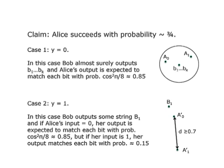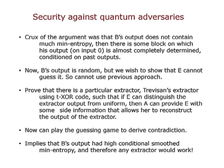I was very sloppy in this argument — assuming Alice could exactly guess Bob's string and that you were exactly at 0.85. You can weaken all these parameters and everything works out. So how do you move on to reasoning about security against quantum adversaries? If you look back at the argument, the crux was: if B's output does not contain much min entropy, there must be a block that's almost deterministic, and then you can exploit it to get an advantage in the guessing game.